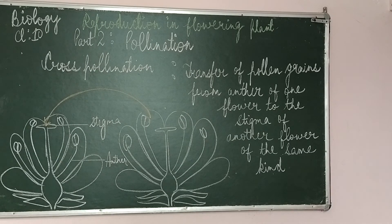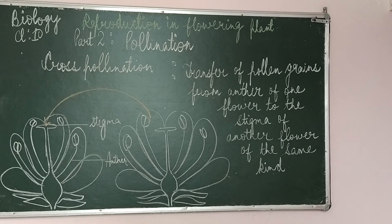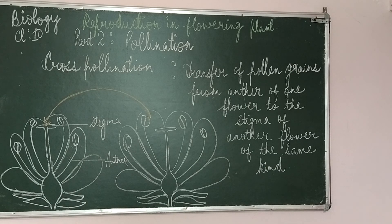Now we'll move on to cross-pollination. You can see the diagram — I have drawn one flower, imagine it to be in one pot, and the second flower is in another pot. Cross-pollination is the transfer of pollen grain from the anther of one flower to the stigma of another flower of the same kind. One kind of plant, like a rose, means it will occur in the rose plant only.